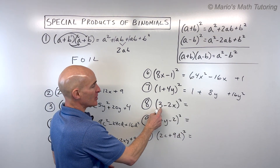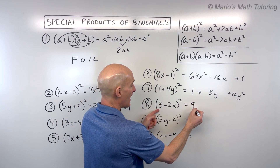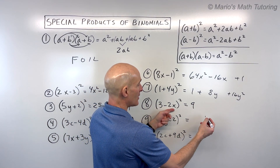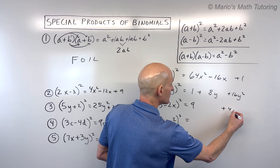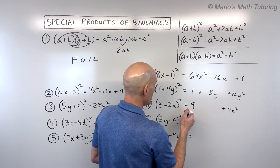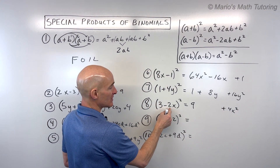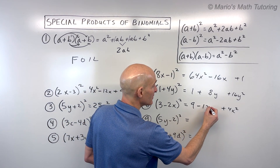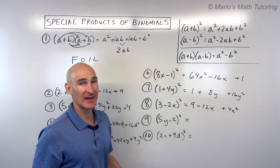Using the shortcut for number eight: 3 squared is 9. Negative 2x times itself is 4x squared. Then a times b times 2: 3 times negative 2x is negative 6x, doubled is negative 12x. See how quick that is?